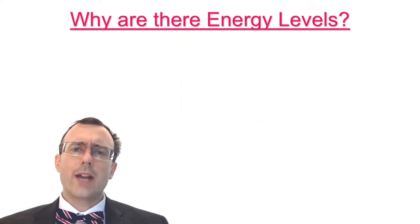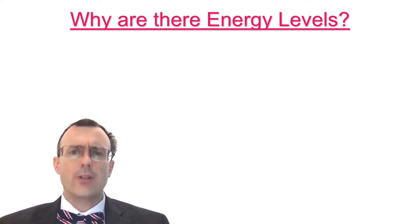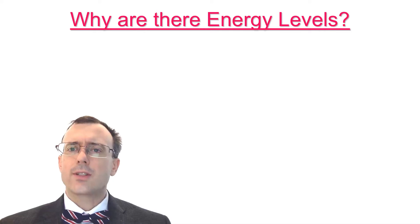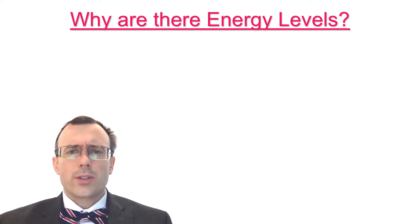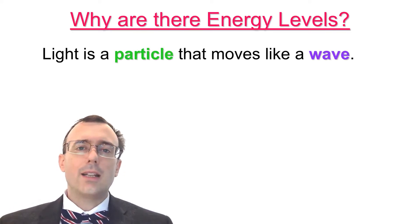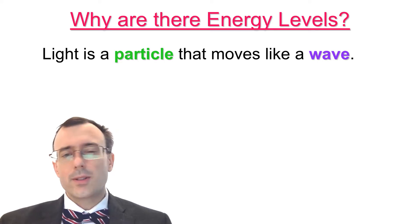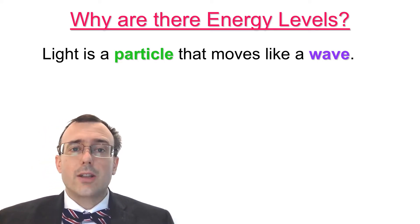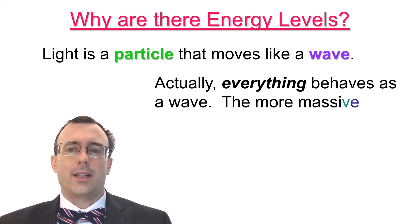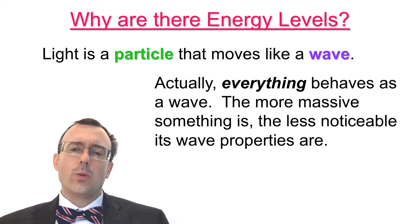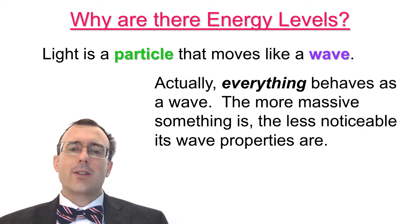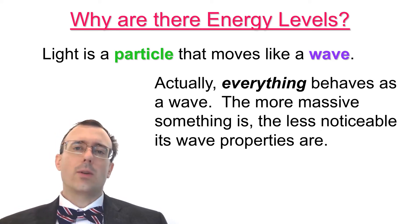So why are there energy levels in atoms? What's causing those energy levels to be there in the first place? It seems strange that the electron would have to have a certain specific energy. It turns out we can gain some insight by remembering that light is a particle that moves as a wave — there was that whole debate about whether light is a particle or a wave, and it's actually both. It gets even weirder: everything behaves as a wave, and we don't notice it because the more massive something is, the less noticeable its wave-like properties.